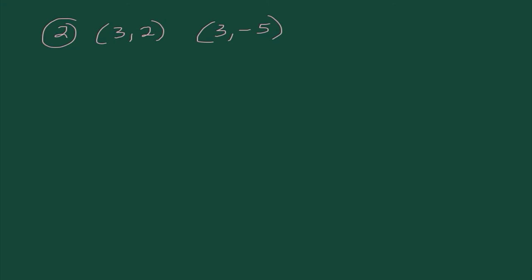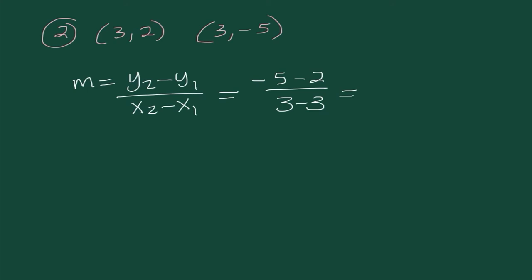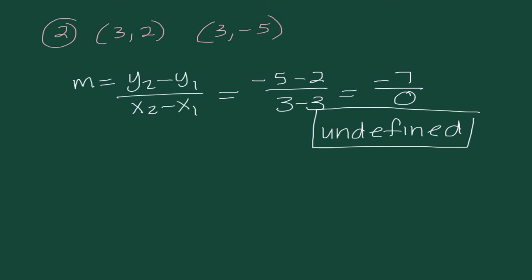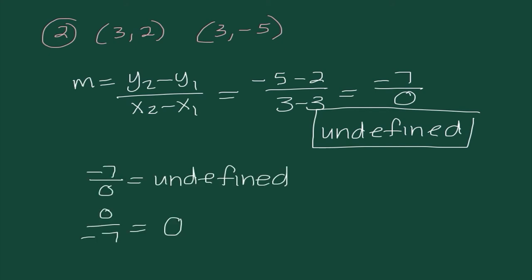For number 2, slope equals Y sub 2 minus Y sub 1 over X sub 2 minus X sub 1. Substituting in: negative 5 minus 2 over 3 minus 3 gives negative 7 over 0. We can never divide by 0, so this is undefined — a vertical line, also called no slope. A key reminder: anything over 0 is undefined, but 0 over a value gives a slope of 0.